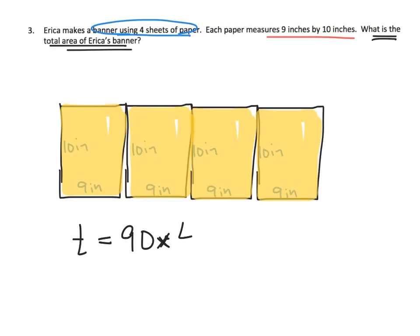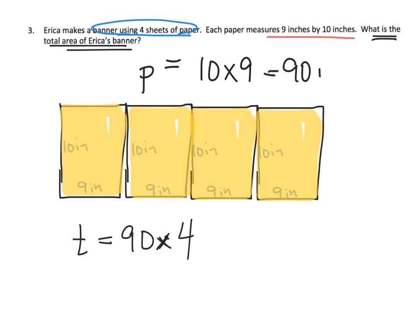Each piece of paper measures 9 inches by 10 inches, so I'll shade one in to represent 90 square inches. The area of one piece of paper is 10 × 9 = 90 square inches. So the total area equals 90 × 4. I'll leave that final calculation up to you to finish solving.